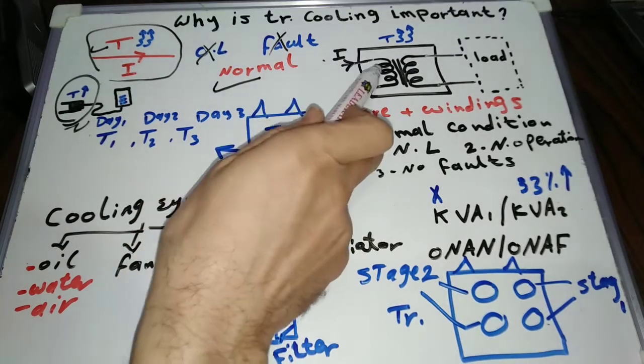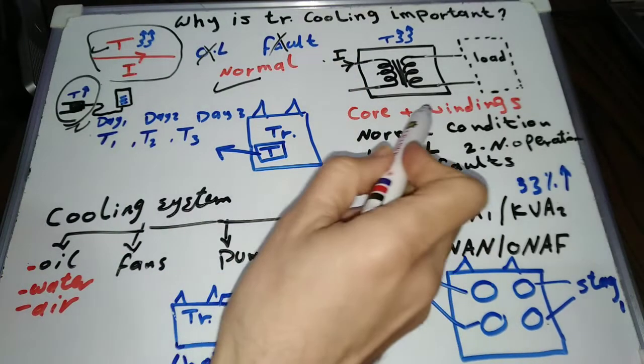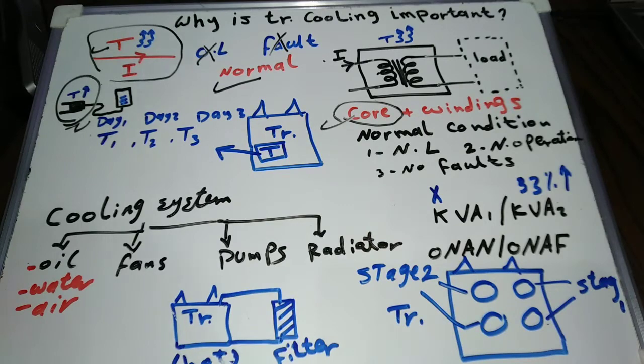Electric transformers are not an exception. Current passing through the transformer winding, which is a conductor, produces heat. Transformers also have an extra source of heat, the iron core.